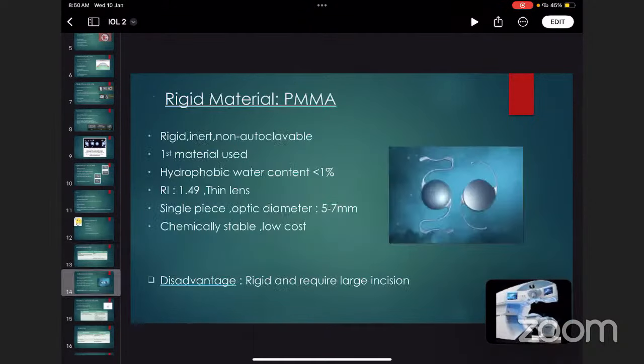Rigid material, polymethyl methacrylate, is a rigid, inert, non-autoclavable material. It was the first material used. It is hydrophobic in nature with water content less than 1%, refractive index 1.49. It's a thin lens, single piece, with optic diameter 5 to 7 mm. Chemically stable and low cost. Disadvantage: rigid and requires large incision to insert in the eye.